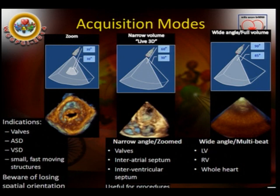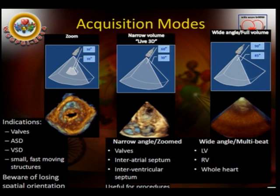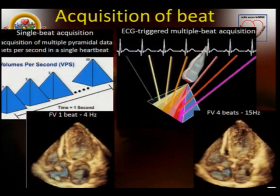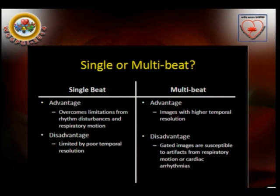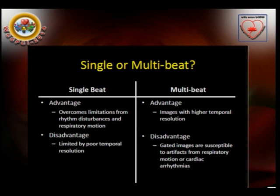These are the acquisition modes. In zoom acquisition, we can see the valves, atrial septal defects, and ventricular septal defects. In narrow volume, live three-dimensional imaging of valves and the interventricular septum are useful. In wide-angle acquisition, the left ventricular, right ventricular volumes, and the whole heart may be visualized better. Regarding single-beat versus ECG-triggered multi-beat acquisition: the single-beat advantage is that it overcomes limitations of rhythm disturbances and respiratory motion, but the limitation is poor temporal resolution. Multi-beat images have higher temporal resolution but are disadvantaged by respiratory variation and arrhythmias.